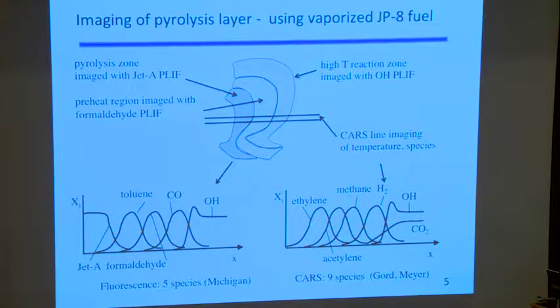Toluene fluoresces very nicely. Carbon monoxide can be measured with two-photon fluorescence developed at Stanford. OH fluoresces nicely in many labs. But then there are other species people would like to know about - ethylene, acetylene, methane, hydrogen, CO2.